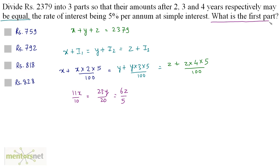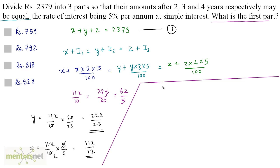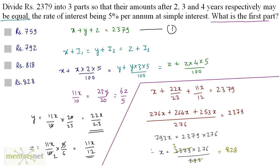The question asks for the first part x. Expressing y and z in terms of x from the relation 11x/10 equals 23y/20 equals 6z/5: y equals 11x/10 times 20/23 equals 22x/23, and z equals 11x/10 times 5/6 equals 11x/12. Substituting into equation 1: x plus 22x/23 plus 11x/12 equals 2,379. Solving this gives x equals 828.